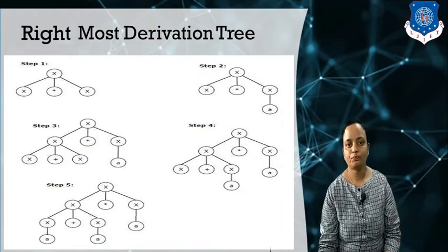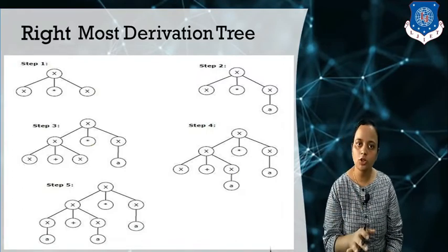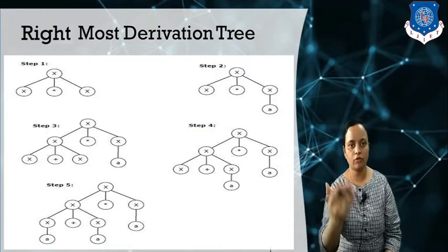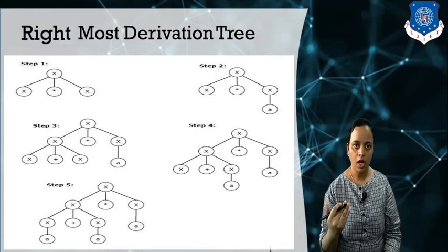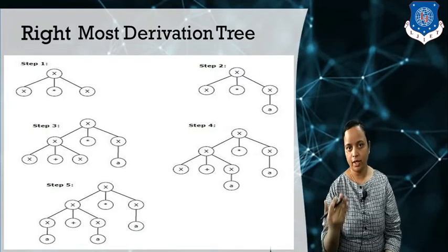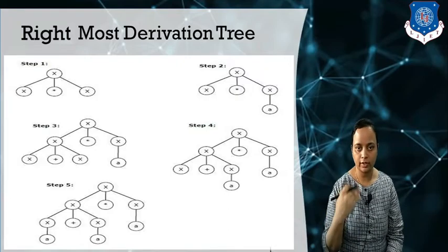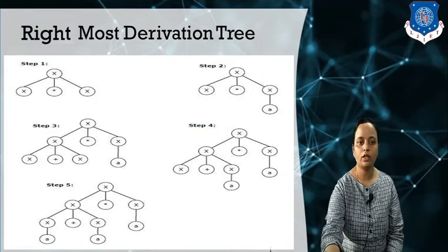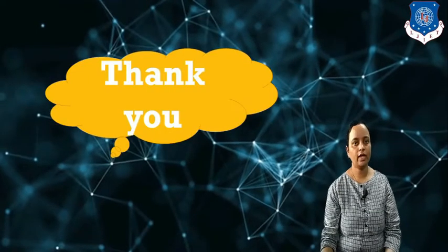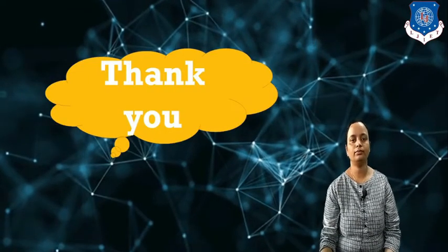So this is the leftmost derivation and rightmost derivation from the given context-free grammar for the given strings. I hope this topic is clear to you. Thank you all.